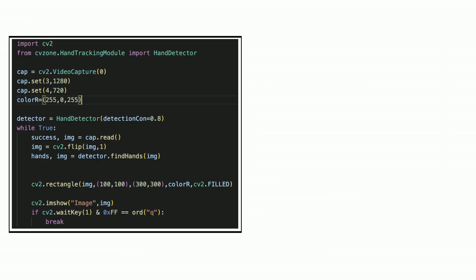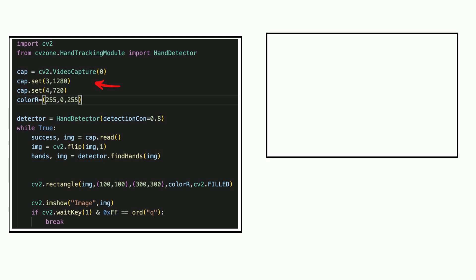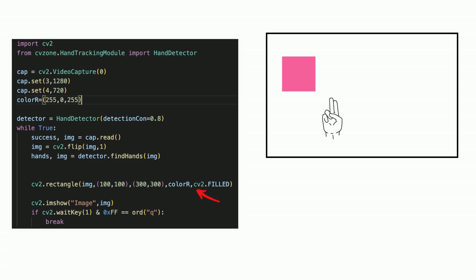Let's study the codes. Add the libraries. Open the camera. Retrieve hand tracking. Add a box. Set pink color.